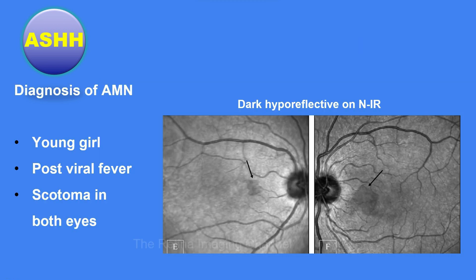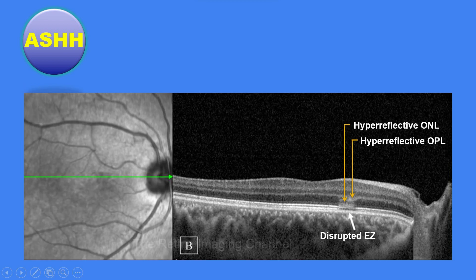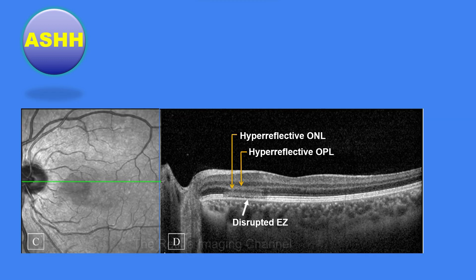Let us see another example of ASHH in a case of AMN. These are the infrared images of the right and left eyes of a young girl who complained of scotoma after recovering from viral fever. The hyporeflective dark patches nasal to the fovea, marked by black arrows, are suggestive of AMN in this clinical scenario. The diagnosis is further substantiated by ASHH in both eyes: the right eye shows hyperreflective OPL and ONL with disruption of the ellipsoid zone, and similar findings are seen in the left eye. This is a classical case of AMN with ASHH.